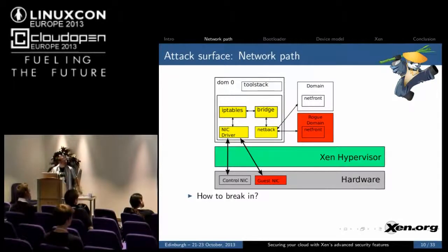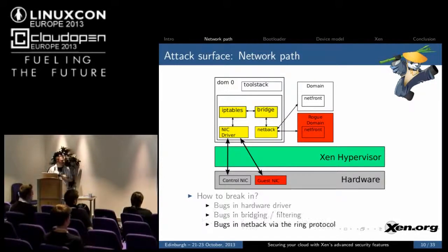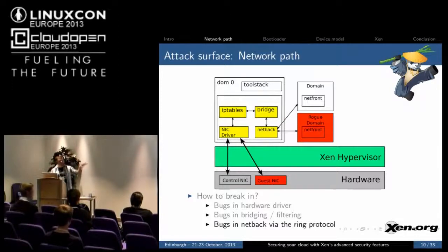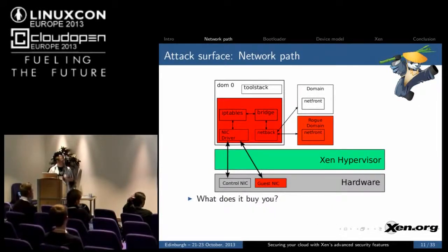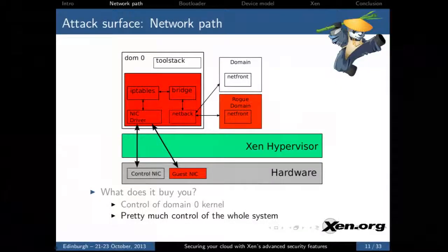Let's take a look at our first attack surface: the network path. How might someone break in here? There may be bugs in the hardware network driver, there may be bugs in the bridging or the filtering code, and there may be bugs in the netback via the ring protocol. Netback is a very simple interface with a relatively low chance of having a bug, but IP tables and the bridging code are very complicated. If they do break in, it buys you control of the domain 0 kernel — all of these things run in domain 0 at the kernel level, and because domain 0 is a trusted kernel, it basically gives you control of the whole system.